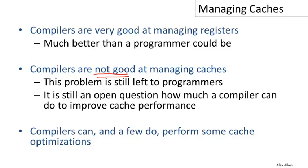They have to understand what their program is doing. They have to understand a little bit about what the compiler is capable of doing. And then they still have to write the program in such a way that it's going to be cache-friendly. It's still very much an open question how much a compiler can do to improve cache performance, although there are a few things that we've found that compilers can do reliably.